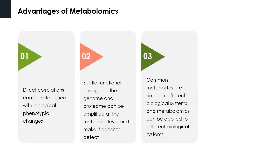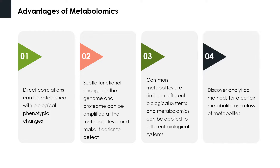In fact, the quantity of metabolites in plants, animals, and microorganisms is much less than that of genes and proteins. Meanwhile, the most common metabolites are highly similar among various biological systems; thus, metabolomics is applied to different biological systems. The generality of metabolites of organisms is relatively large, so it is reasonable to discover analytical methods for a certain metabolite or a class of metabolites without considering species specificity.